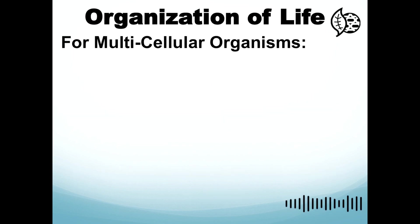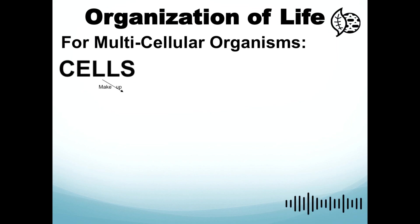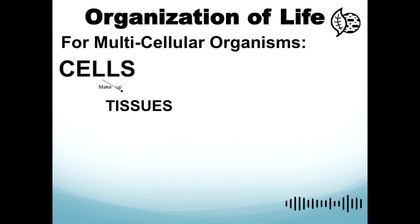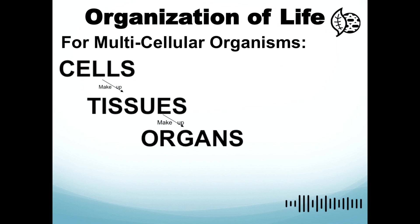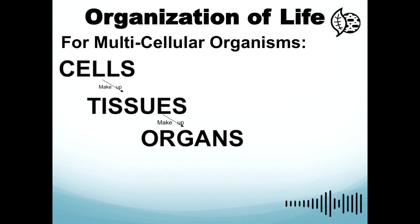Now let's look at the organization of life, or the levels of biological organization. The first level is the cell, considered the smallest functional unit of life. Cells make up tissues — a tissue is a group of cells performing a similar function. Organs are groups of different tissues joined structurally and cooperating functionally to perform specialized tasks. Examples of organs include the heart, liver, and lungs.